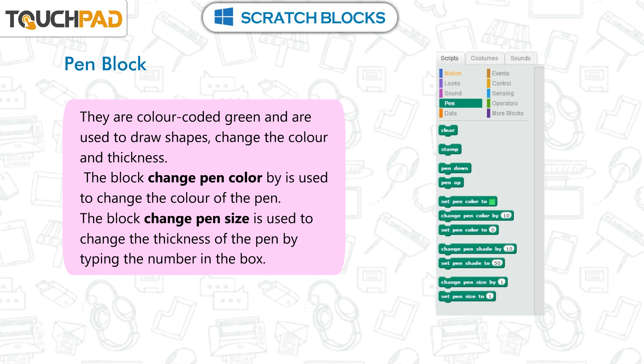Pen Blocks are color-coded green and are used to draw shapes, change the color, and thickness. The block 'change pen color by' is used to change the color of the pen. The block 'change pen size' is used to change the thickness of the pen by typing a number in the box.